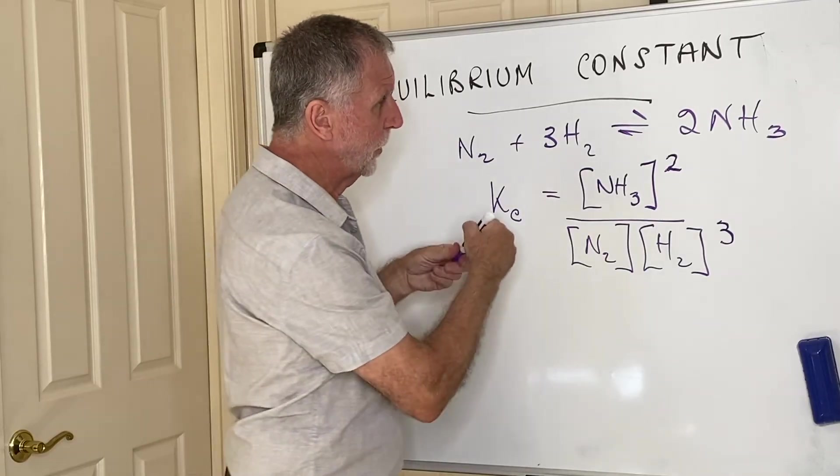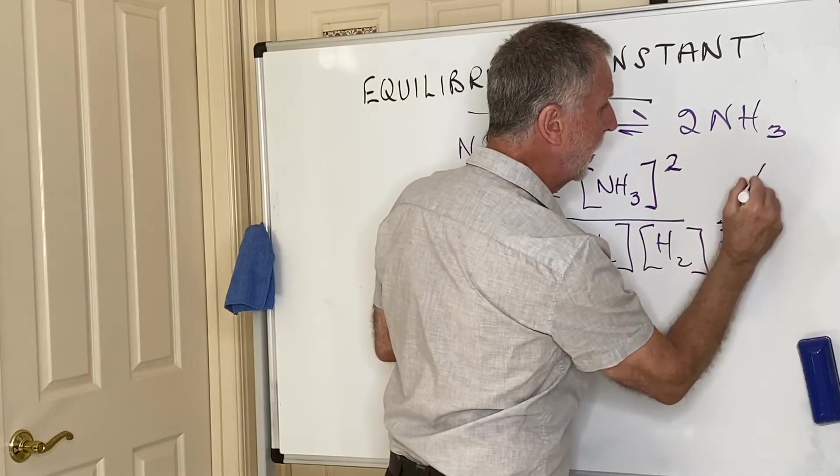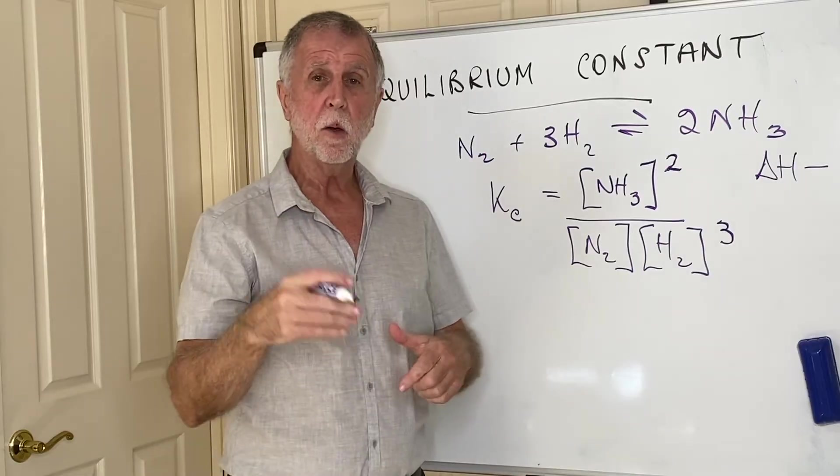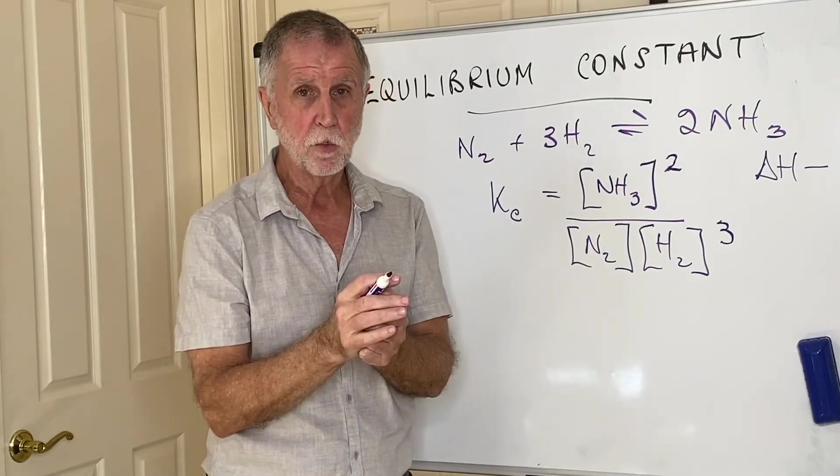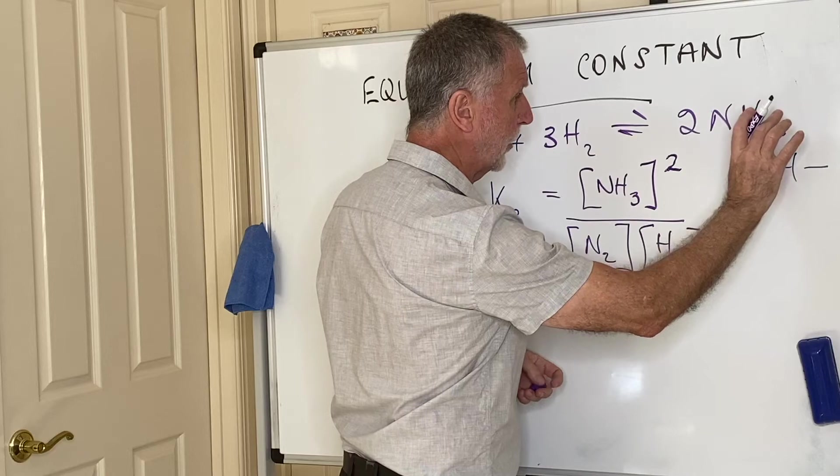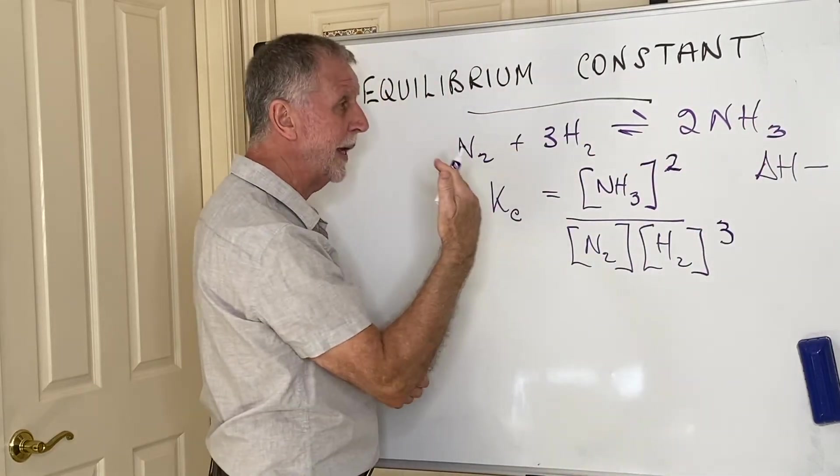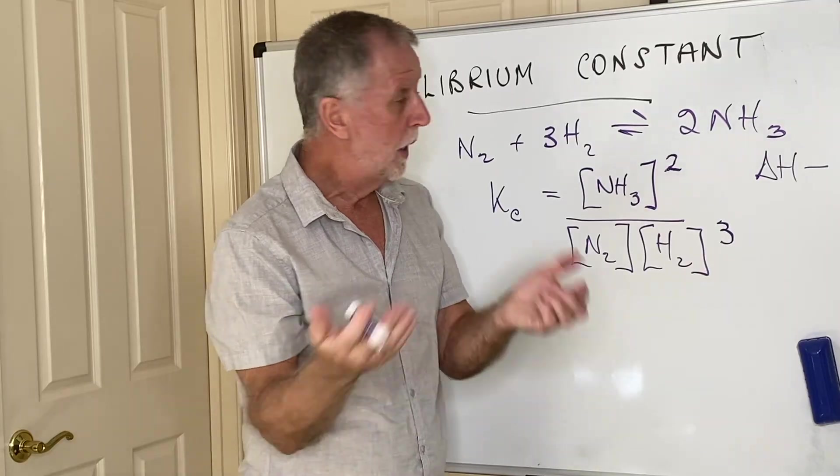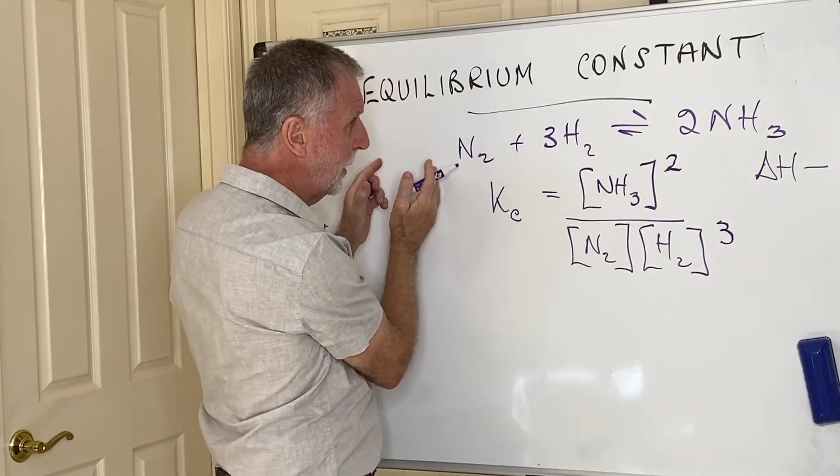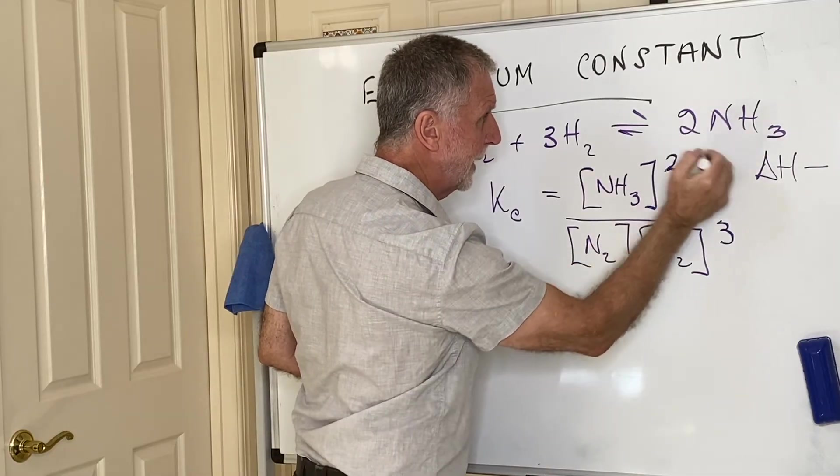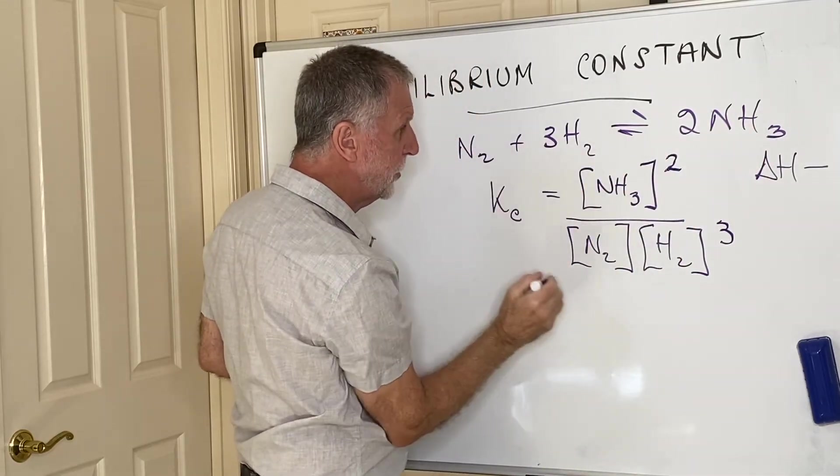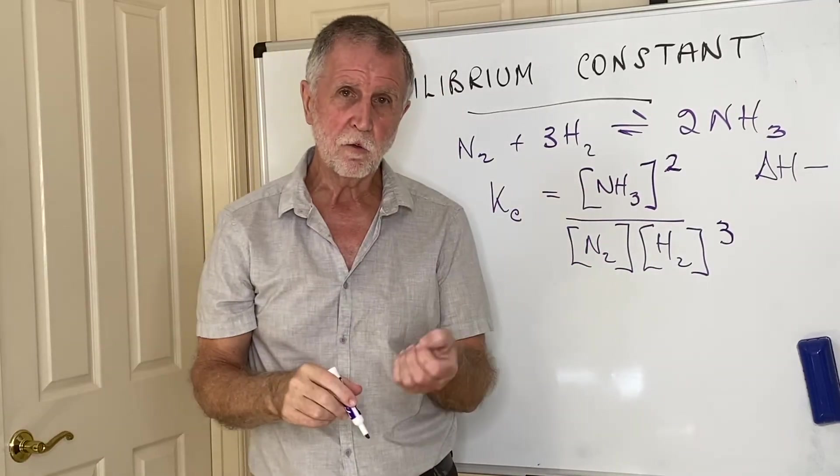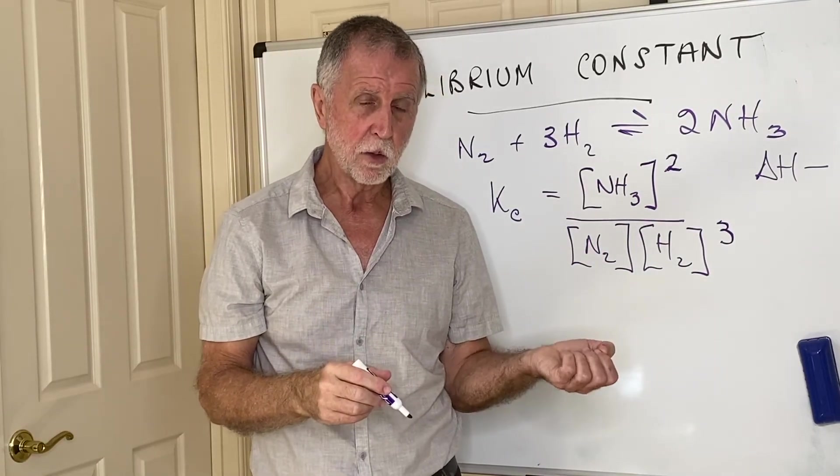If we go back to this process here, remember we said that it's an exothermic process in the forward direction. So, for example, now let's say I heat the system. We know that when you heat an exothermic reaction, then the back reaction, the endothermic one, will be favored, opposing the change that's been made. If you go back this way, then effectively this concentration gets less and these concentrations get more. So in this expression, K would now have a smaller value than it did before.